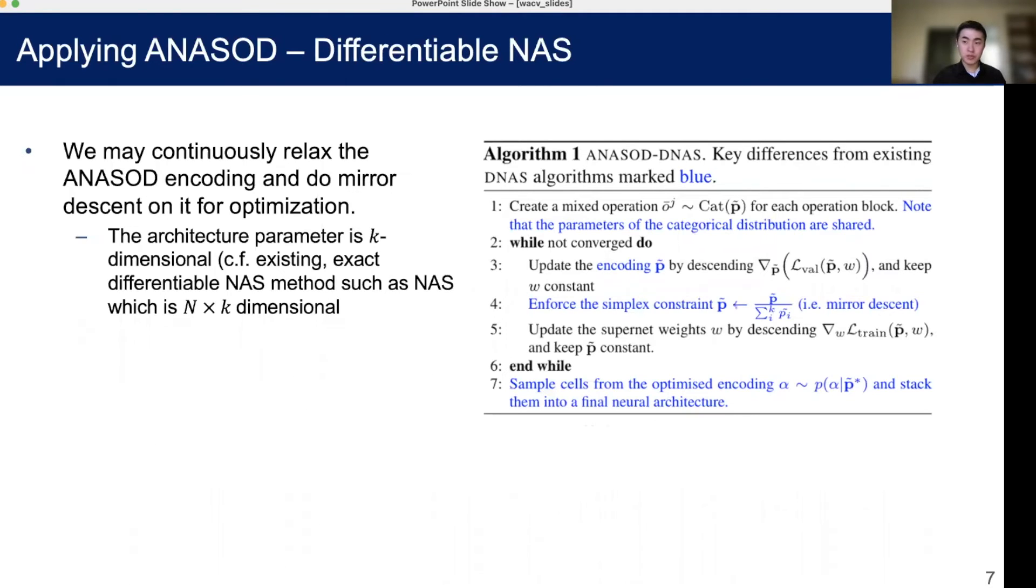We could also use differentiable NAS, which is a mainstream paradigm in NAS currently. Similar to how we would like to do continuous relaxation and gradient descent on the exact encoding, we could do that on the ANASOD encoding as well, which is much lower dimensional. The difference is we now have to enforce the simplex constraint. That's why we do a mirror descent instead of a simple gradient descent.